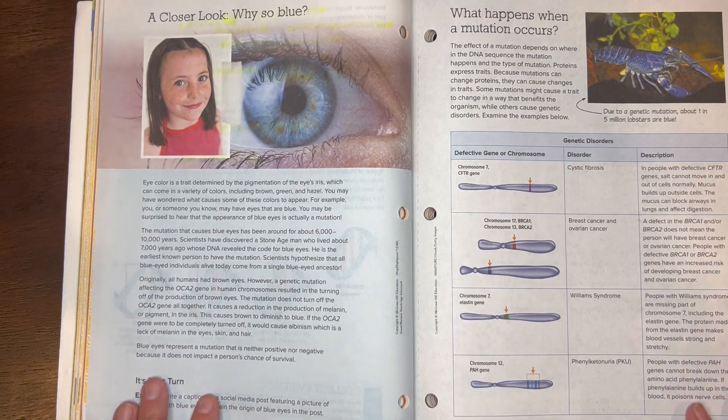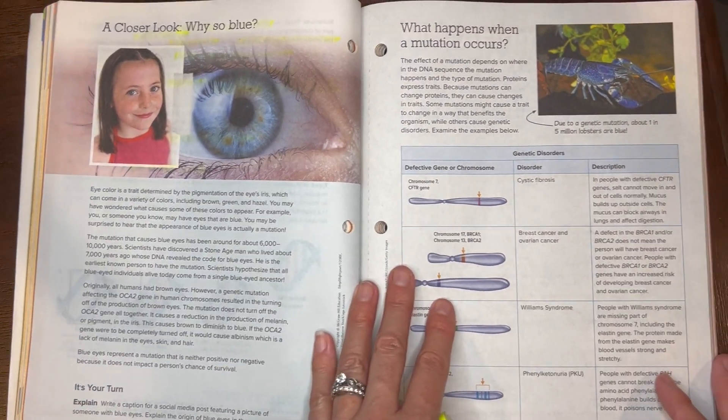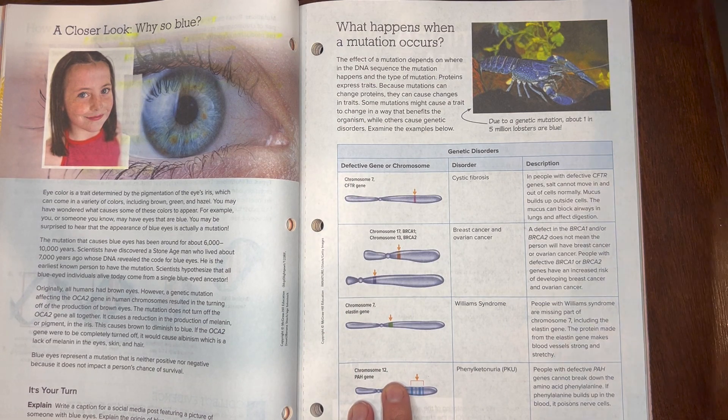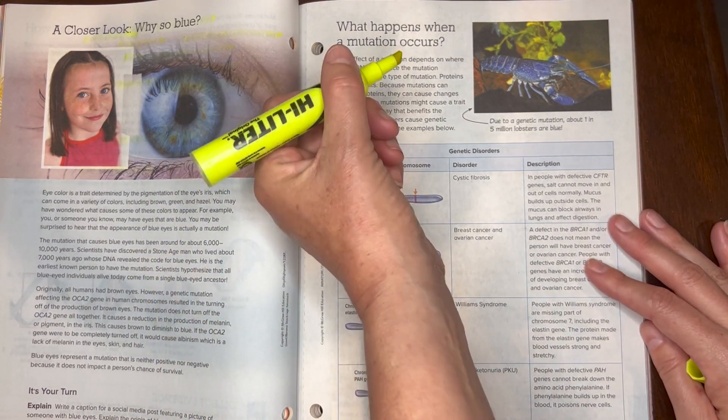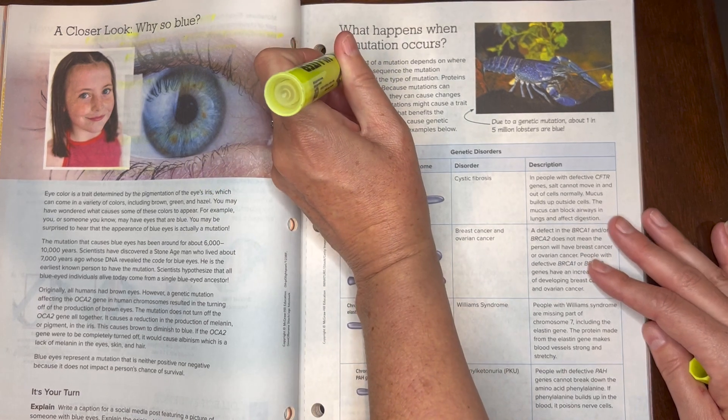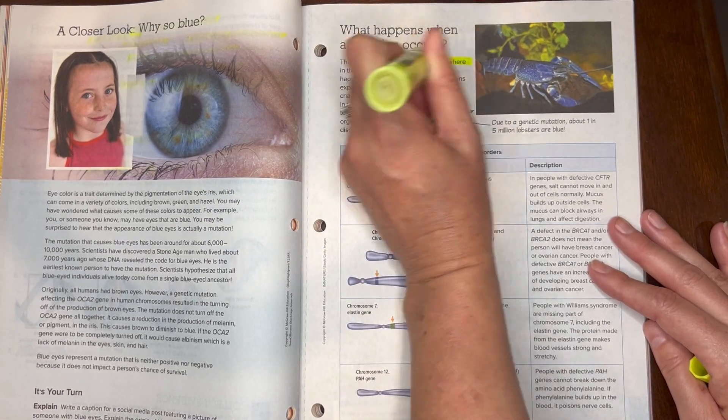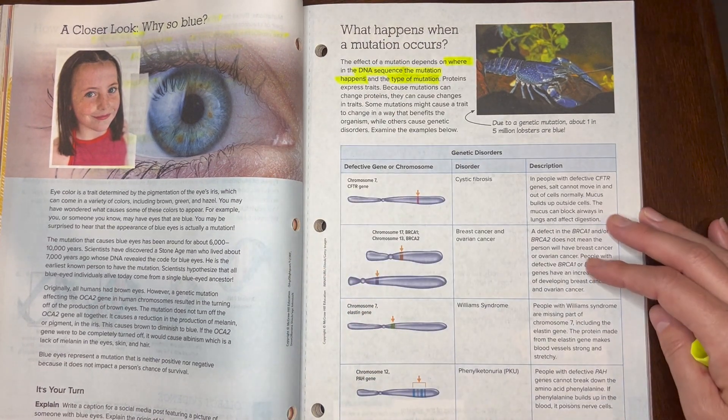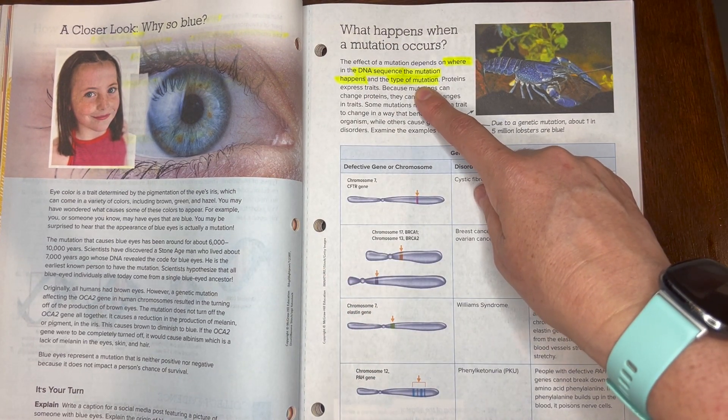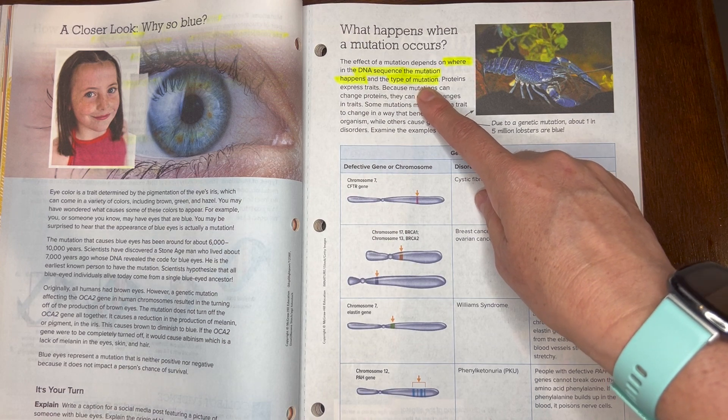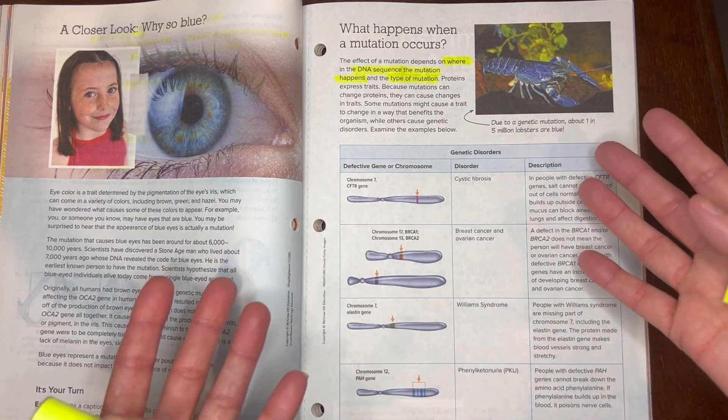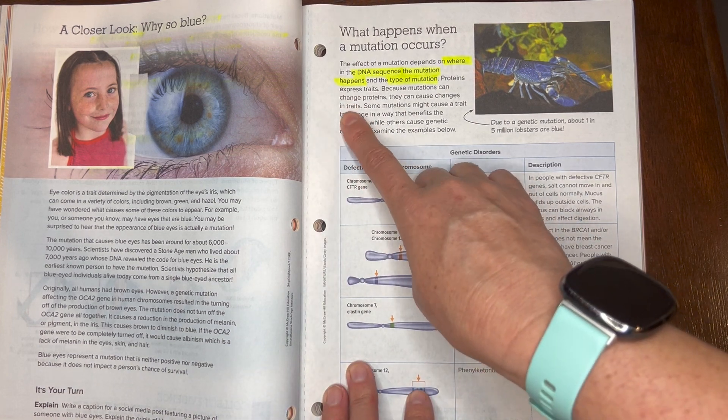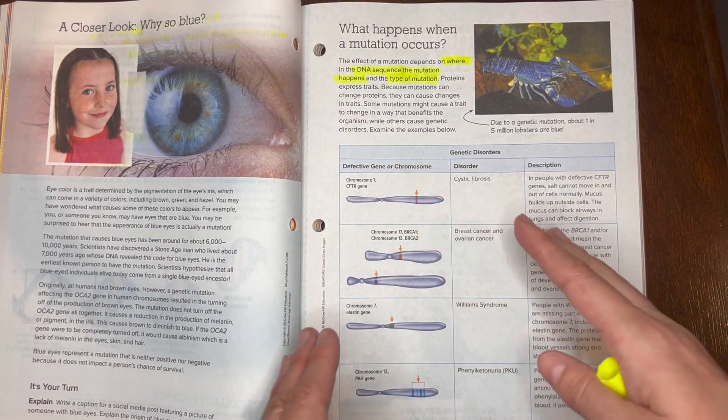When a mutation happens, this affects the DNA sequence. It also depends on where in the DNA sequence the mutation happens and the type of mutation we just talked about, because where it happens in the DNA is going to show in different ways. Remember it changes the proteins, it's going to change your trait.